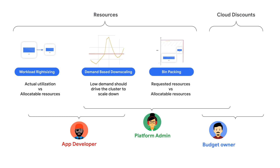The third golden signal is bin packing. Bin packing is making sure you're requesting the appropriate machine type and properly packing the pods deployed in your environment. Cluster bin packing is another shared responsibility between developers and platform teams, where both should collaborate to find the appropriate machine shape to better fit the workloads.